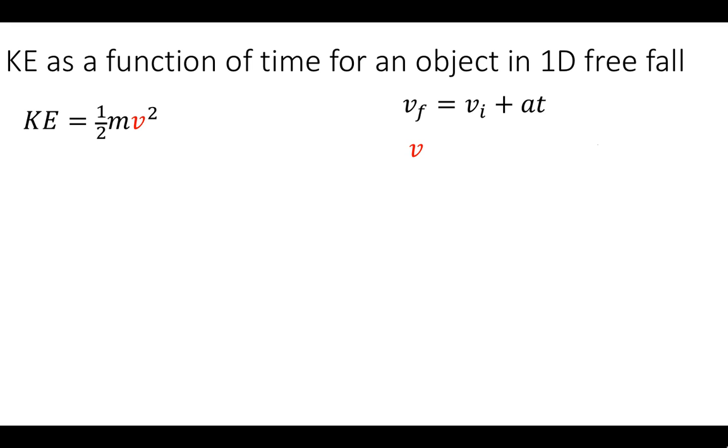The final speed is what we're trying to substitute for. The initial speed is a constant, and the acceleration is g and downward, so we'll put a negative sign to indicate that down is the negative direction.